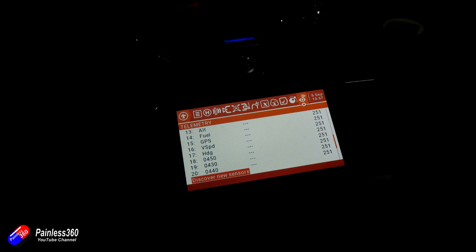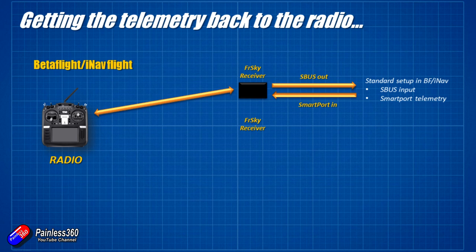Let's talk about how you actually get all that telemetry back from your flight controller. The first, very simple way: assume you have a regular FrSky receiver with an S-Bus output plugged into Betaflight or iNav. You'd normally have a SmartPort connection into that FrSky receiver, then configure Betaflight or iNav — turn telemetry on and set that UART connected to SmartPort for FrSky telemetry, and everything would magically appear on the radio.